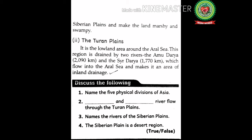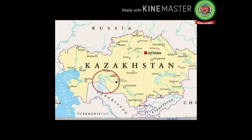The Turan Plains is the lowland area around the Aral Sea. This region is drained by two rivers — the Amu Darya and the Syr Darya ('Darya' means river) — which flow into the Aral Sea, making it an area of inland drainage. Inland drainage is when rivers do not reach an ocean or sea. The Turan Plain is a low-lying desert region stretching from southern Turkmenistan through Uzbekistan to Kazakhstan, and is one of the largest expanses of sand in the world.